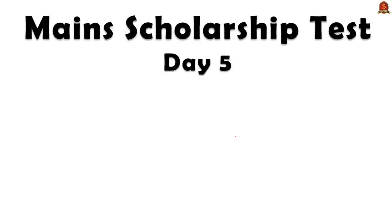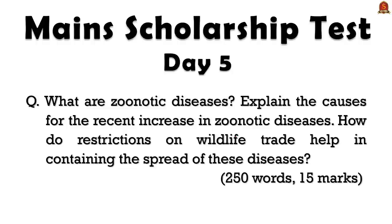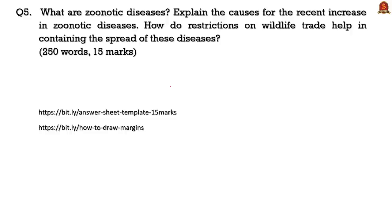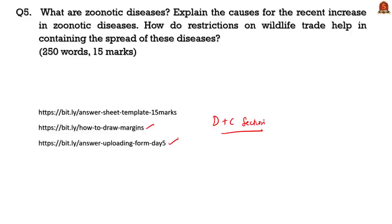We have come to the last part — the question for Day 5 of the main storming scholarship test 2020. Today's question is a 15-mark question to be answered within 250 words and a maximum of three pages. The question reads: 'What are zoonotic diseases? Explain the causes of the recent increase in zoonotic diseases. How do restrictions on wildlife trade help in containing the spread of these diseases?' You can take a printout of the main answer sheet — the link is available in the description and comment section. If you do not have access to a printer, draw margins on an A4 sheet.